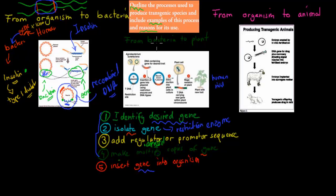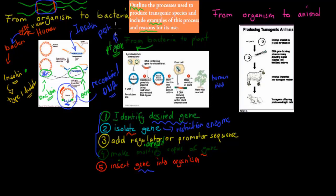Another example: if we have a gene that comes from bacteria and we want to put it into a plant. An example would be the BT gene, which we'll cover soon. The BT gene from the bacteria makes a plant pest resistant — it's a gene usually found in bacteria, but it will make the plant pest resistant.